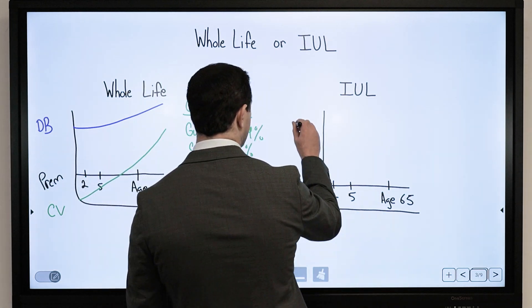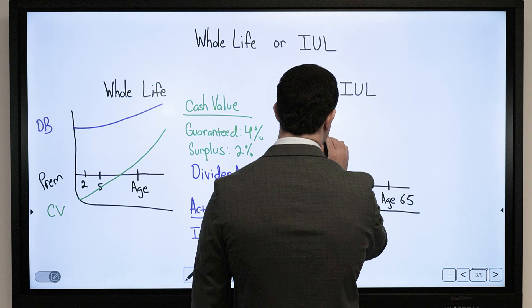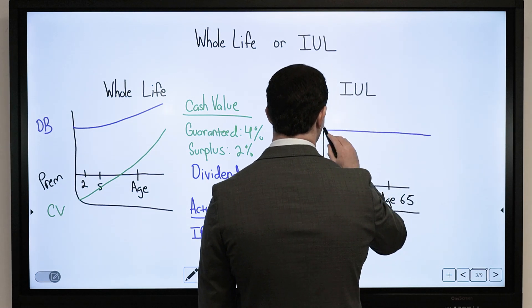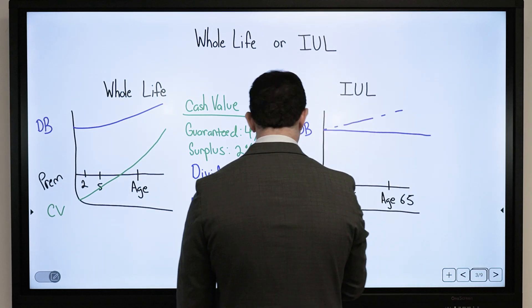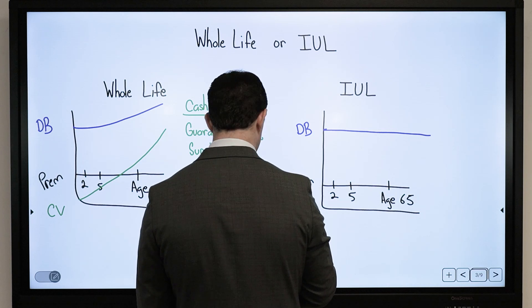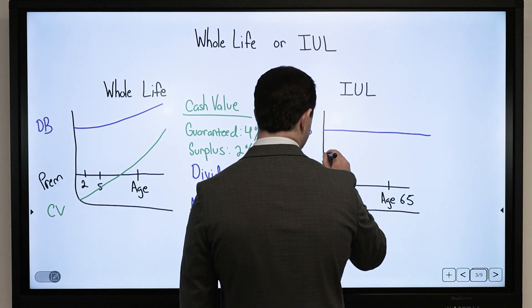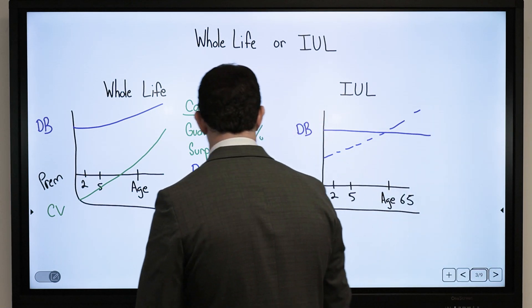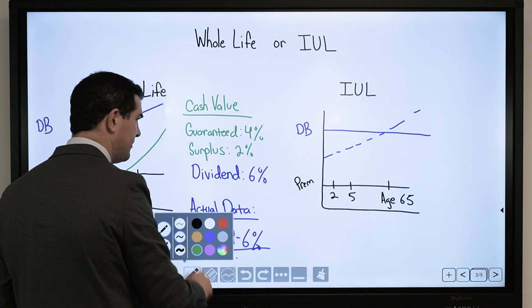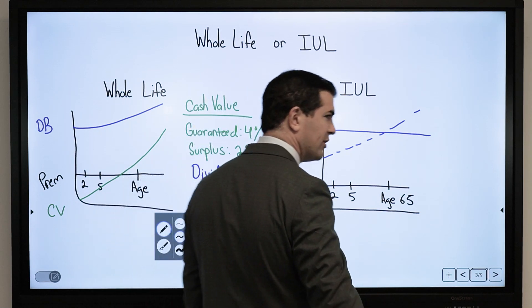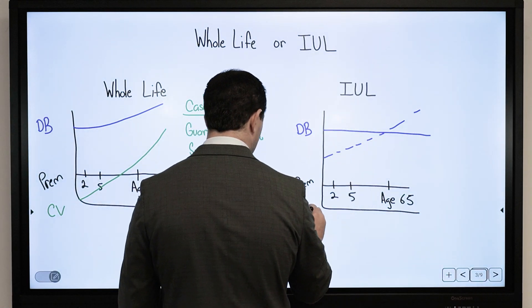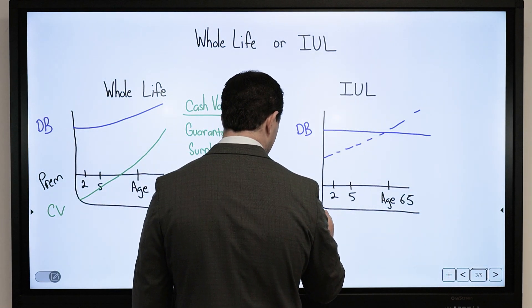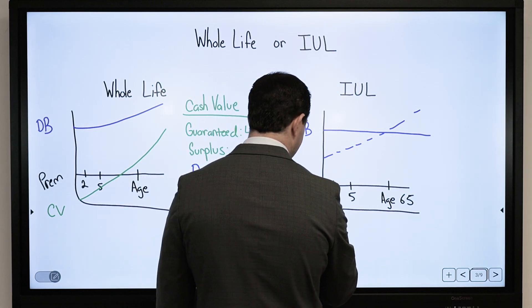The death benefit you can design where it is level or increases over time. Typically if we're designing an increasing death benefit, we'll start lower or we can fund up to the MEC limit. That decreases the insurance expenses and you can pull levers to constantly reduce it as well.